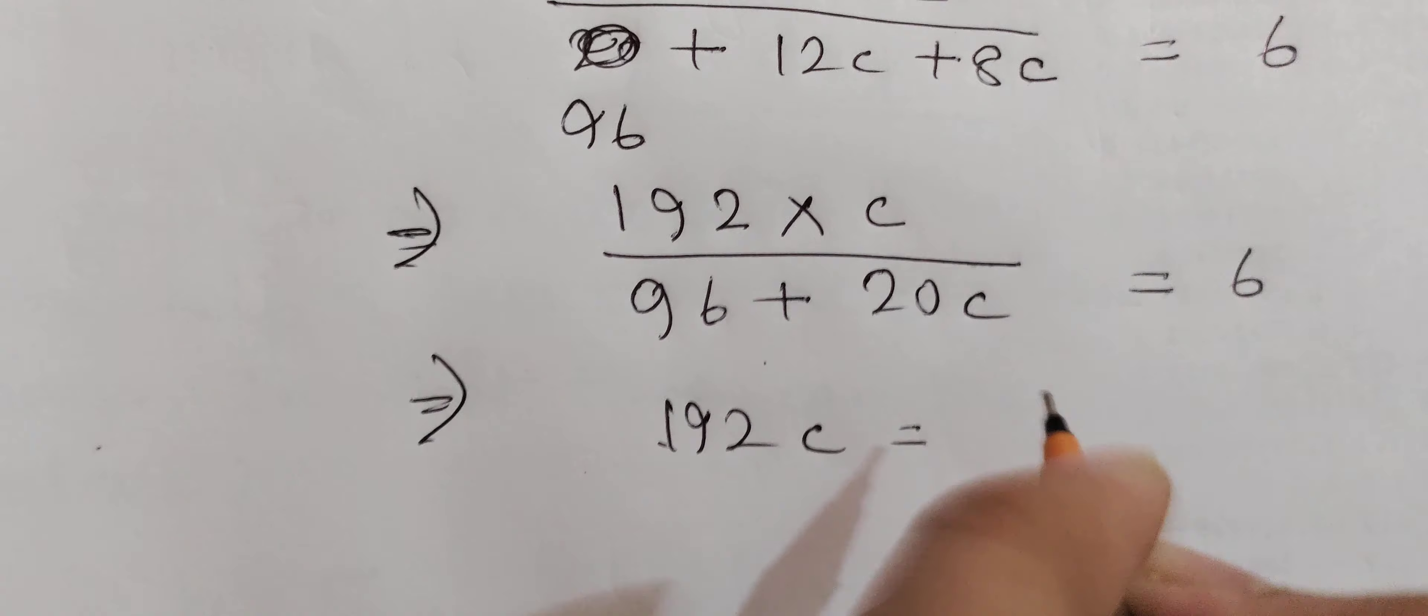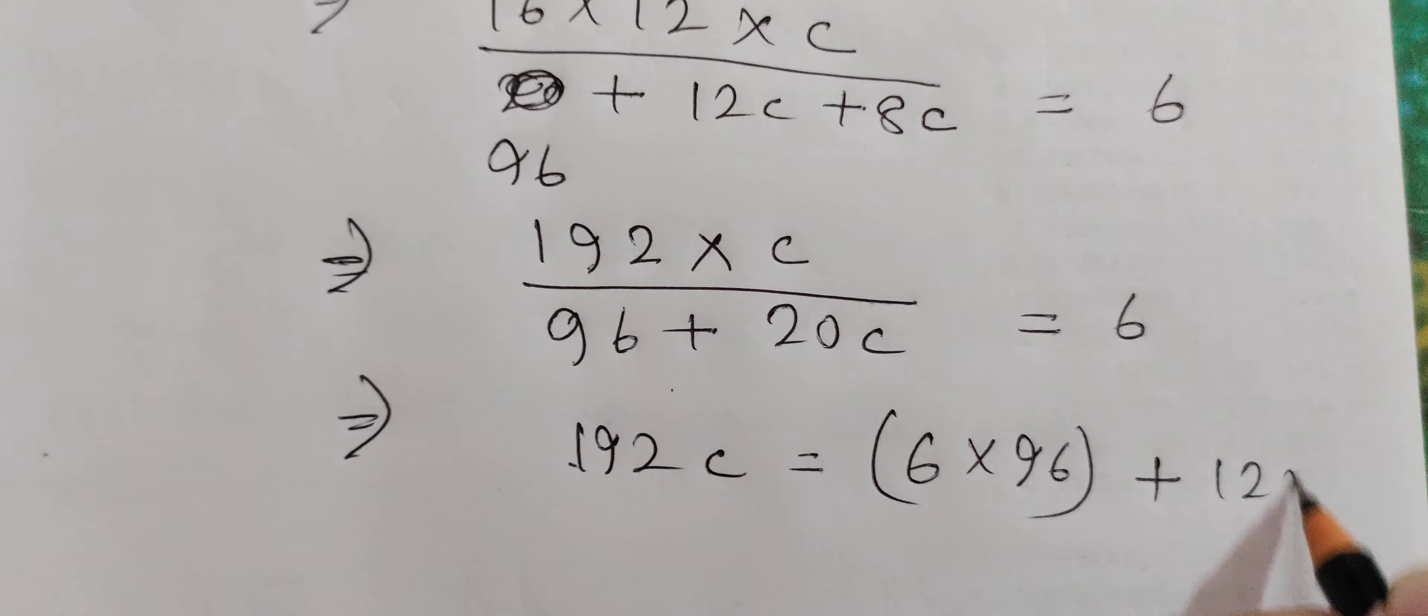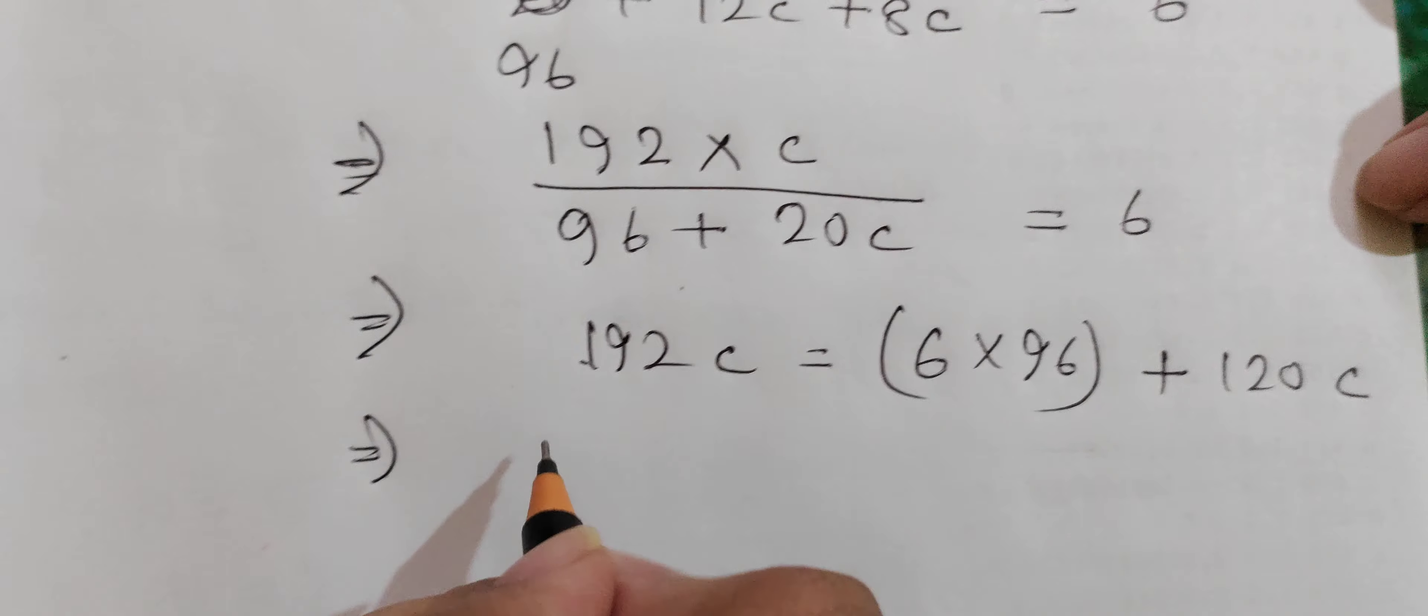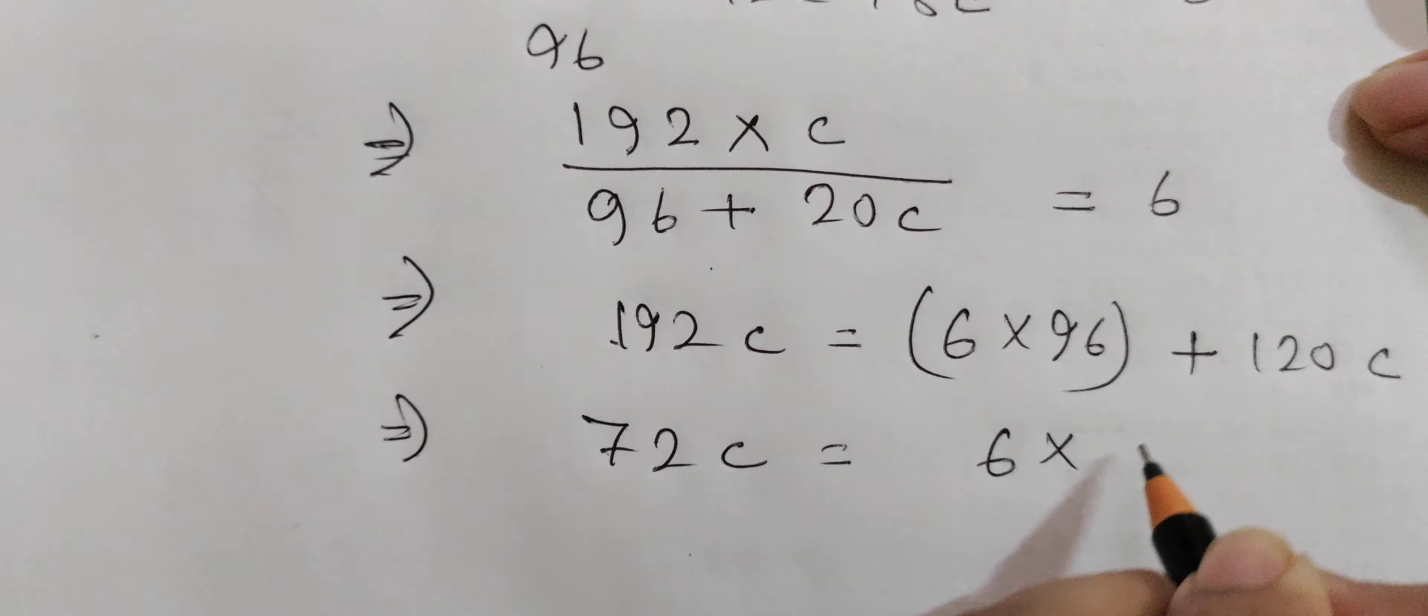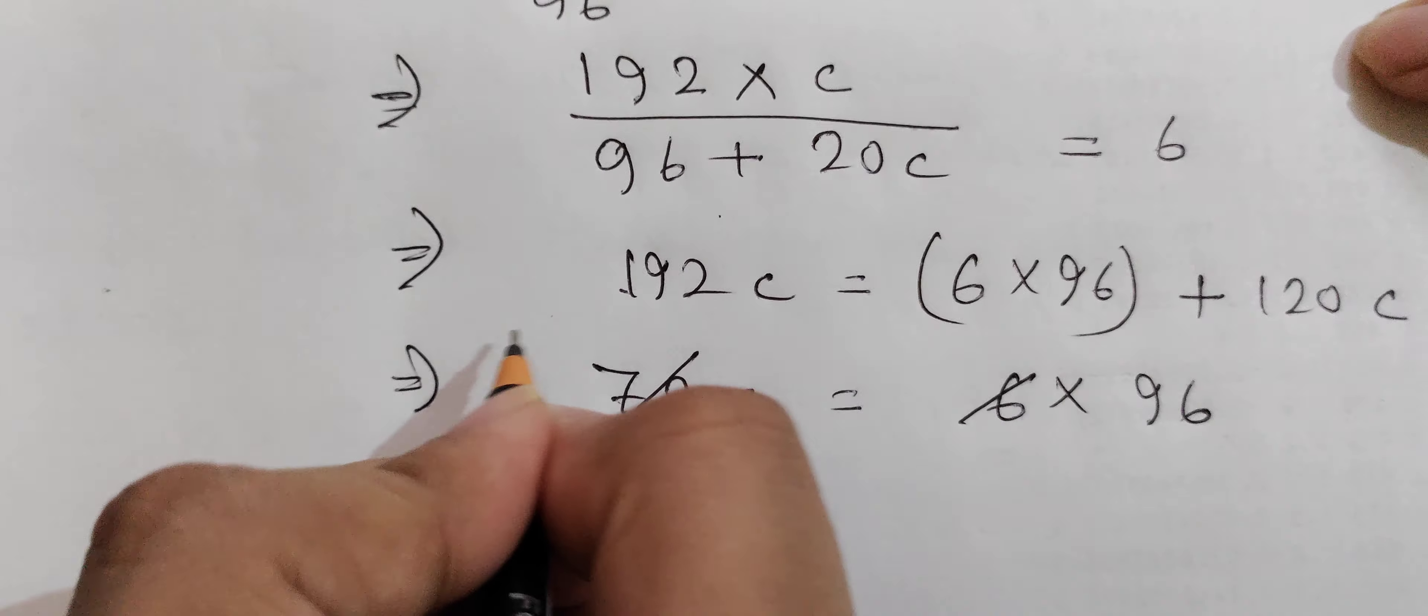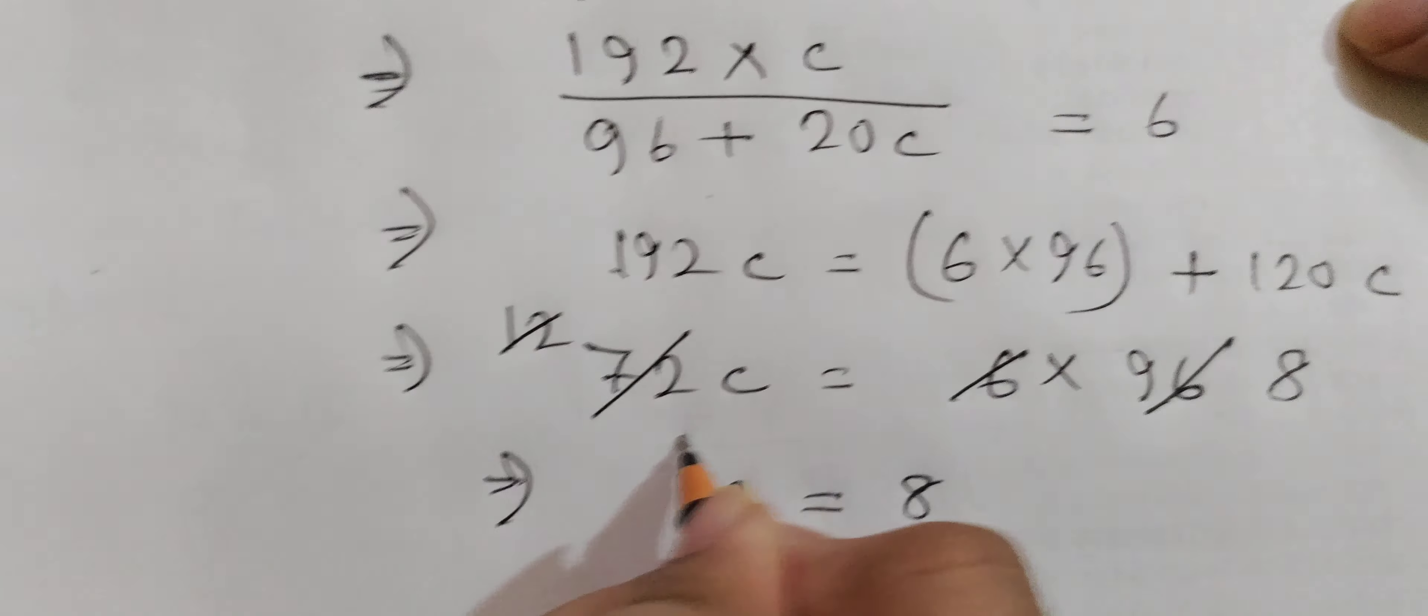Now 192c equals 6 times (96 plus 20c), which gives 576 plus 120c. Taking this to the other side, 192c minus 120c equals 72c, which equals 576. So c equals 8.